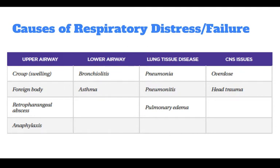The upper airway causes could be croup or swelling, foreign body, retropharyngeal abscess, or anaphylaxis. For the lower airway, it can be bronchiolitis or asthma. For lung tissue disease, it could be pneumonia, pneumonitis, and pulmonary edema. For CNS issues, it could be an overdose or head trauma.